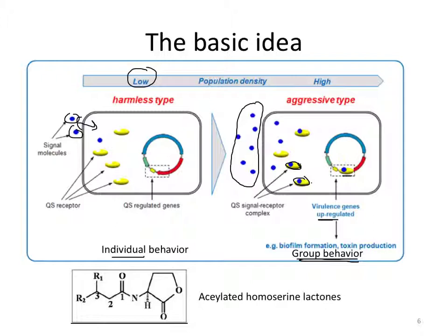Many of the auto-inducers studied in nature fall into a group called the acylated homoserine lactones, or AHLs. The R groups are the part of the molecule that can vary between species, while the lactone ring is common to many of these auto-inducers. There are probably other auto-inducer categories that exist in nature, but this is an important and well-studied category identified in many organisms.